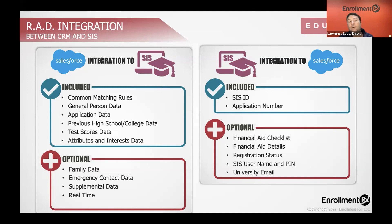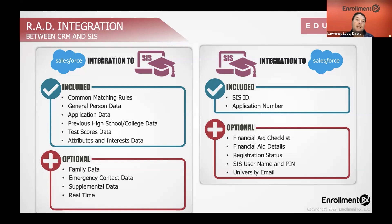Some schools even want this to be real-time. For example, community colleges may want applicants, immediately upon a decision, to be able to register for classes in their student information system — so they want that kind of real-time integration. That's what we would see on the left-hand side: sending data from the CRM over to the SIS in an enterprise integration for recruitment and admissions.